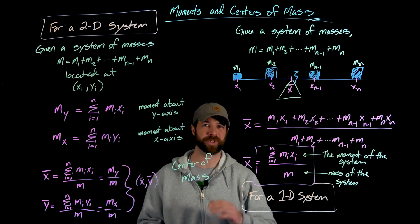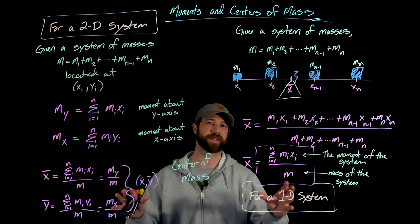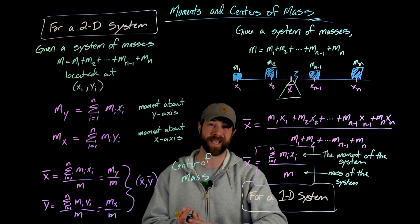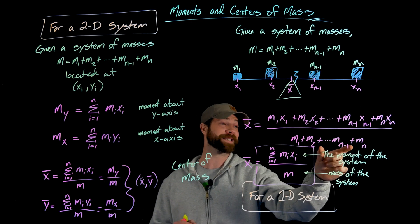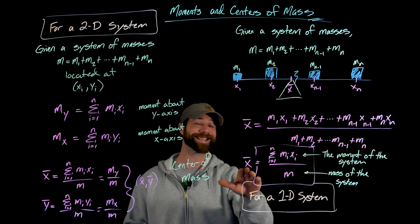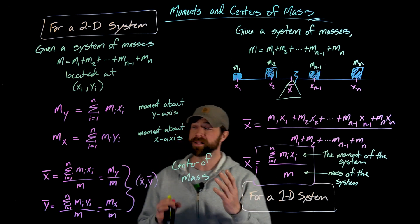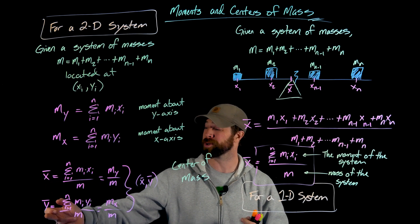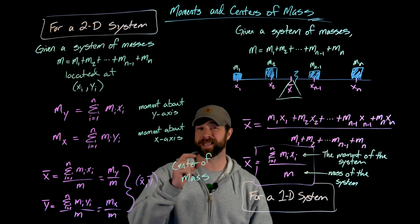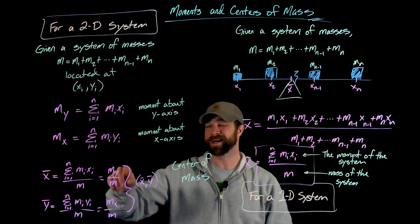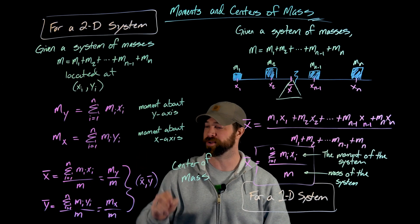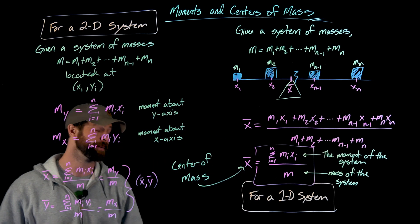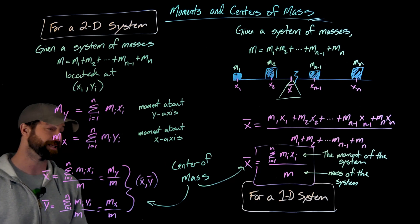To review: for a one-dimensional system, you compute moments by multiplying each mass times its location, then divide by the total mass to find the center of mass. The two-dimensional case is almost exactly the same — you do the same thing for x-values and separately for y-values. The notation is a little awkward since the moment of the y-axis uses x-values and vice versa, but the center of mass is x-bar comma y-bar in the two-dimensional case.